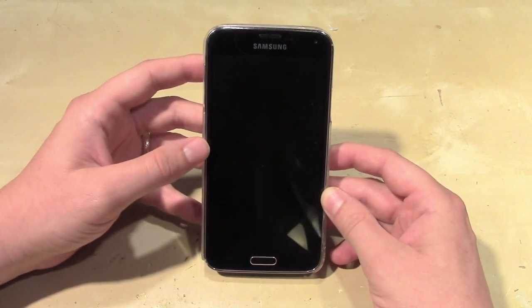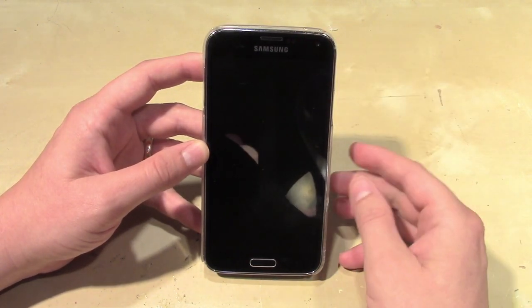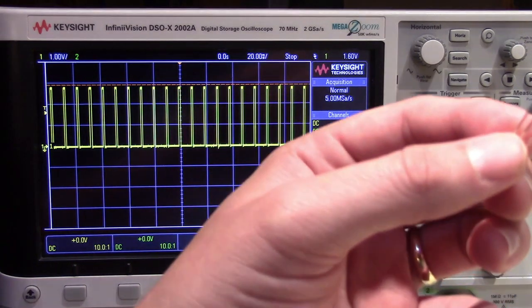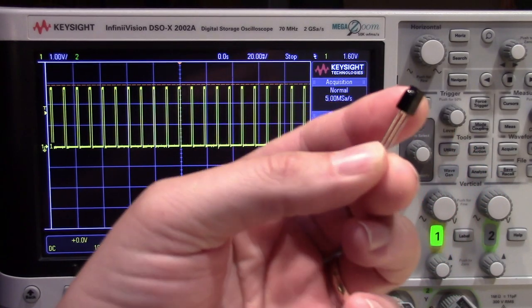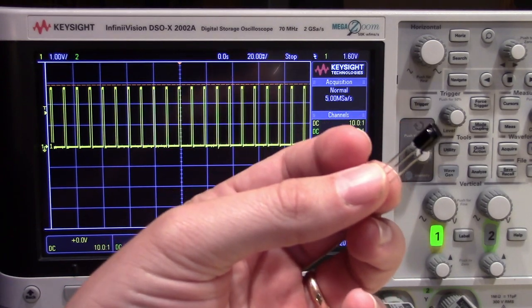But when he first started doing this, he had some technical issues with actually capturing that IR signal. Now the first thing you might turn to if you're trying to capture some infrared data is one of these little IR receivers. These are really easy to use, little 3-pin devices. You hook up power and ground and they output IR data.